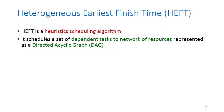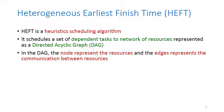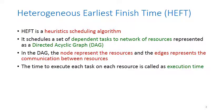The algorithm initially schedules a set of dependent tasks to a network of resources. The network is represented as a Directed Acyclic Graph — there should not be any cycle in the network. In the network, the nodes represent the resources and the edges represent the communication between resources, that is, the temporary results can be communicated from one resource to another.